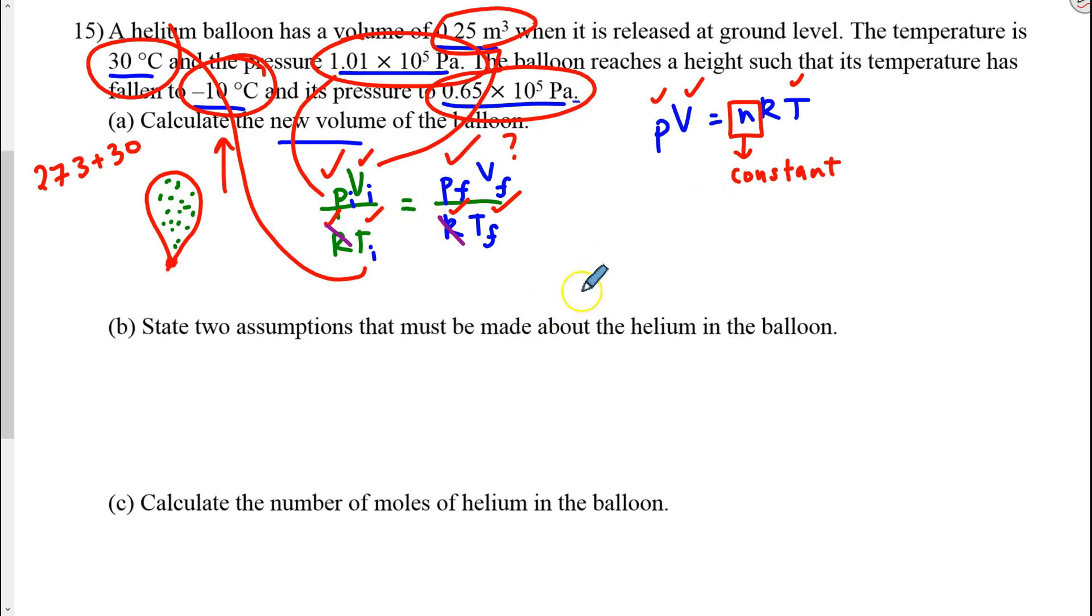Now I'm not going to solve that out. I'll leave that as an exercise for you if you'd like. But I do want to point out there are two assumptions we're making. First, they don't tell us that n is constant. We're assuming n is constant, and it's probably true, but maybe conceivably some of the gas leaks out. We're assuming that doesn't happen. Gas doesn't leak out.